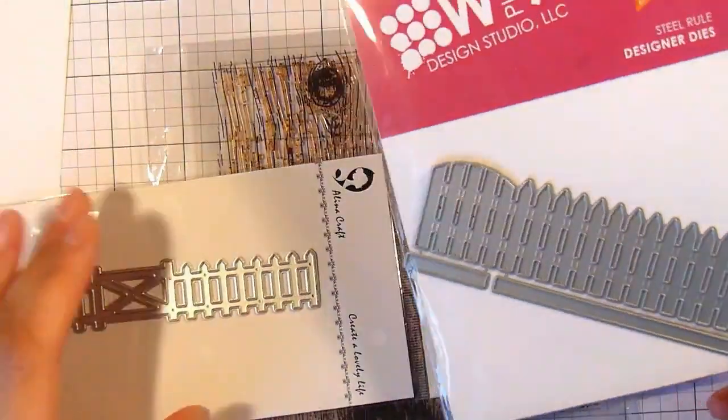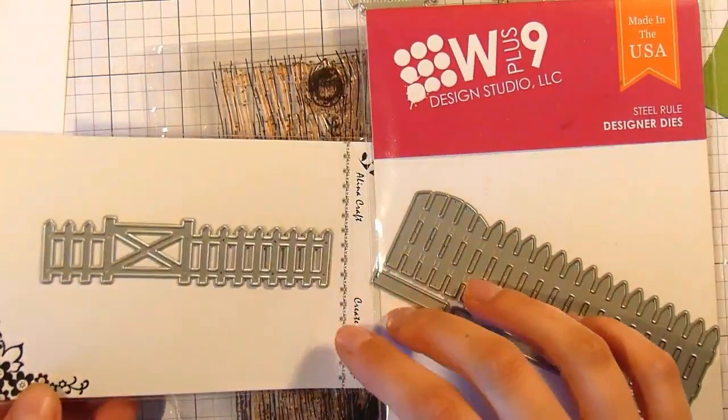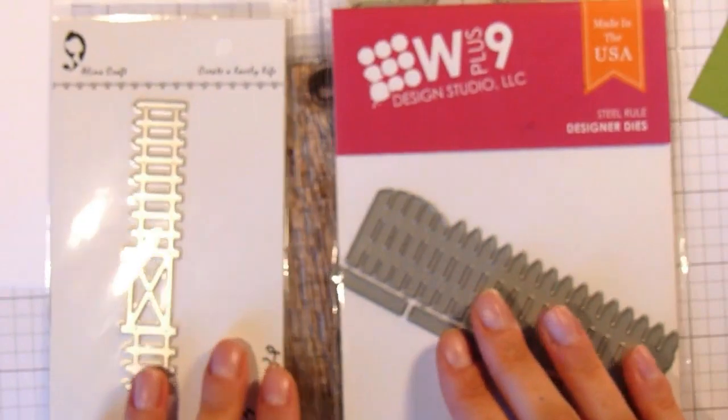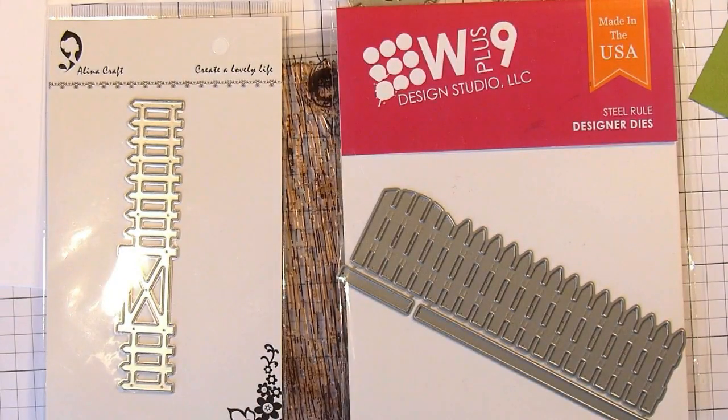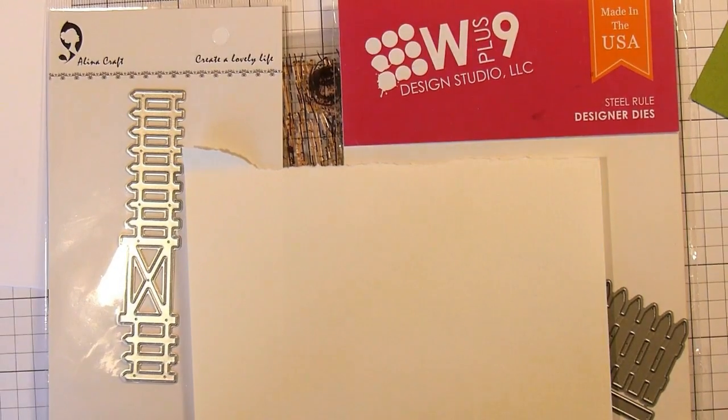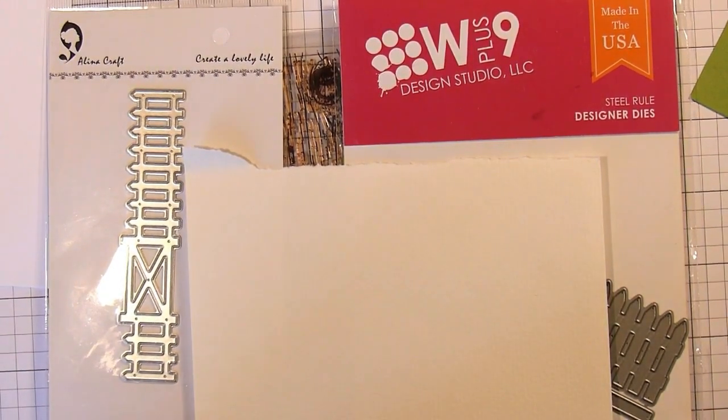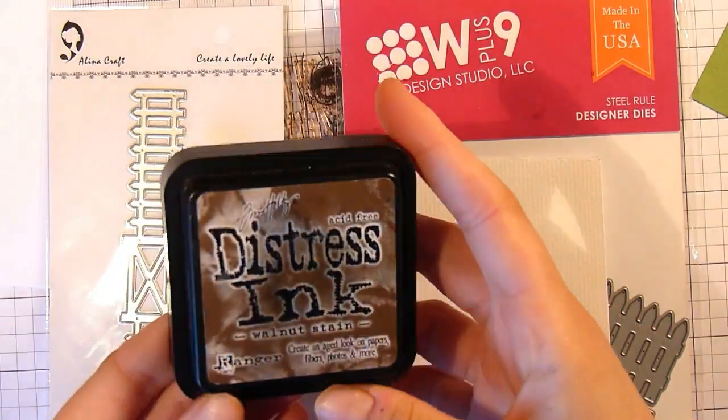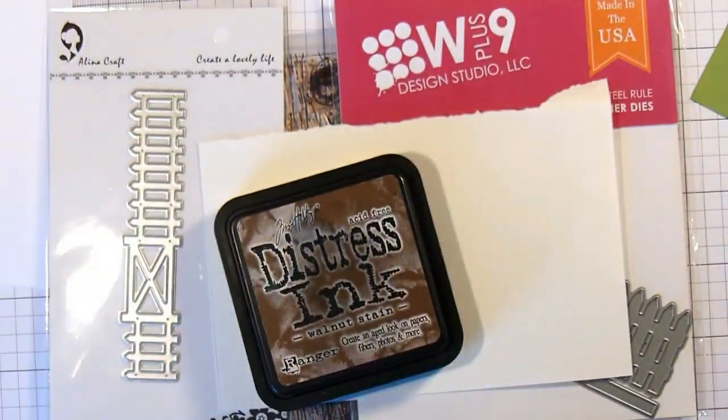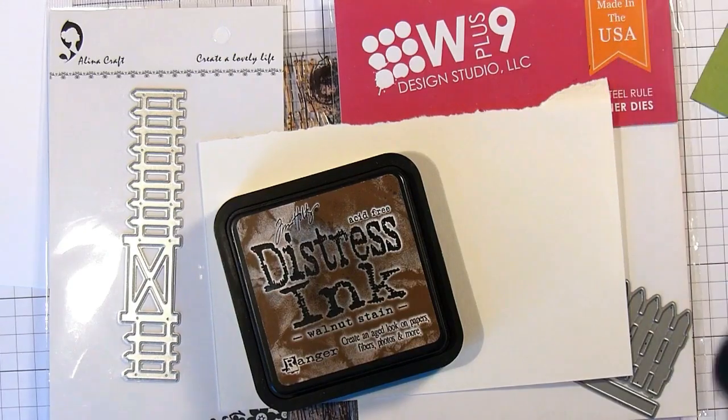I've also got here two of these fence dies. The one on the left, this one that I'm holding up now, is from AliExpress. The one on the right, from WPlus9, is called Fence Border Die. I wasn't sure whether I wanted a larger fence or a smaller fence at this point further back in the distance or closer up. So I'm going to use both of them until I make my mind up.